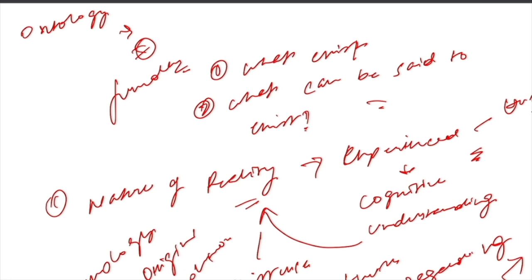Finally, ontology and anthropology intersect in the study of language and communication, where language is a key way that people express their beliefs, values, and practices, and is an important part of cultural identity across different cultural models. Anthropologists use ontological analysis to understand how language is used to express beliefs about the nature of reality and how this links to wider cultural practices and social structures. An example from indigenous cultures shows that language is used to express a deep connection to the natural world and to articulate beliefs about the relationship between humans and the environment.